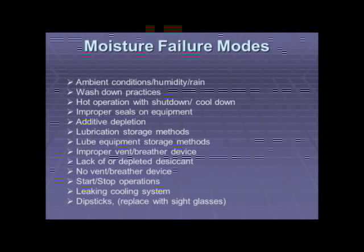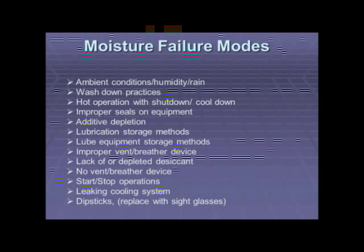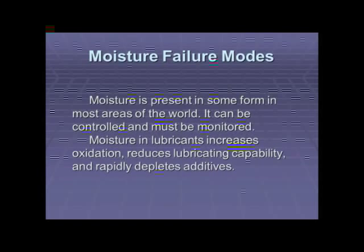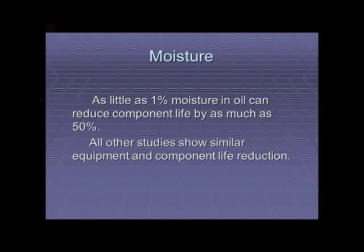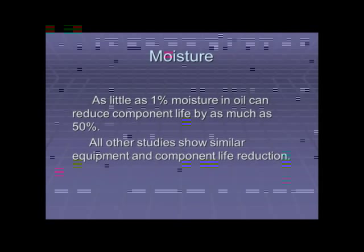One of our practices at Cargill was to replace all the dipsticks with a breather and put sight glasses on gearboxes so we didn't have to worry about the entry point of the dipstick. Moisture is present in some form in most areas of the world — it can be controlled, but it must be monitored. Moisture in lubricant increases oxidation, reduces lubricating capability, and rapidly depletes additives. As little as 1% moisture can reduce component life by as much as 50%, and 2% moisture can reduce component life by up to 86%.